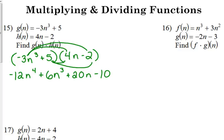Then I look at it, see if I can combine any terms. I don't have any like terms. I've got n to the 4th, n cubed, n, and a constant, so that's as far as we can go. That is the answer right there.